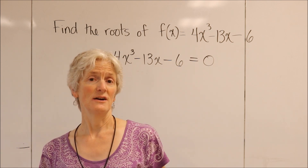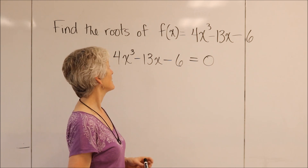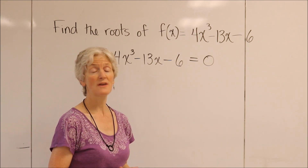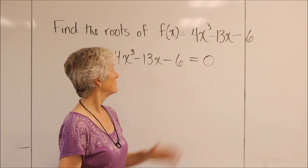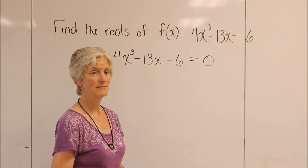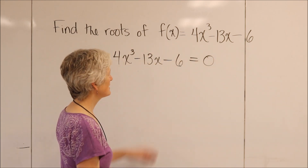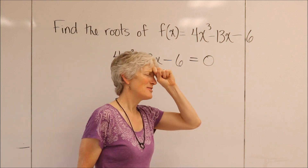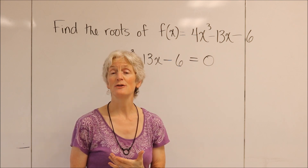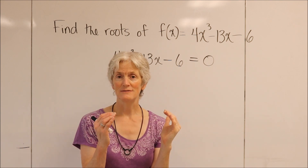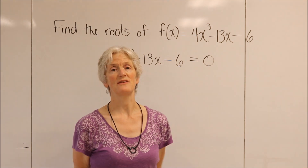I would normally think about factoring here, but I don't really see any obvious way to get factoring, although you can do some guess-and-check factoring and you might be successful — I encourage you to try that. But there is a method that is handy and makes sense. Basically, if you can find one solution, then you can use that solution to find a factor, use polynomial long division, find the other factor, and then you'll have more success solving it.